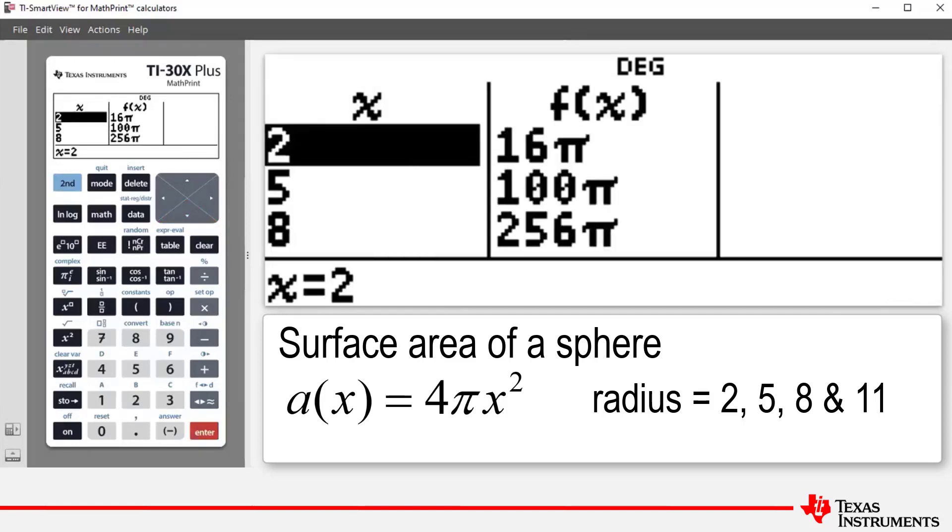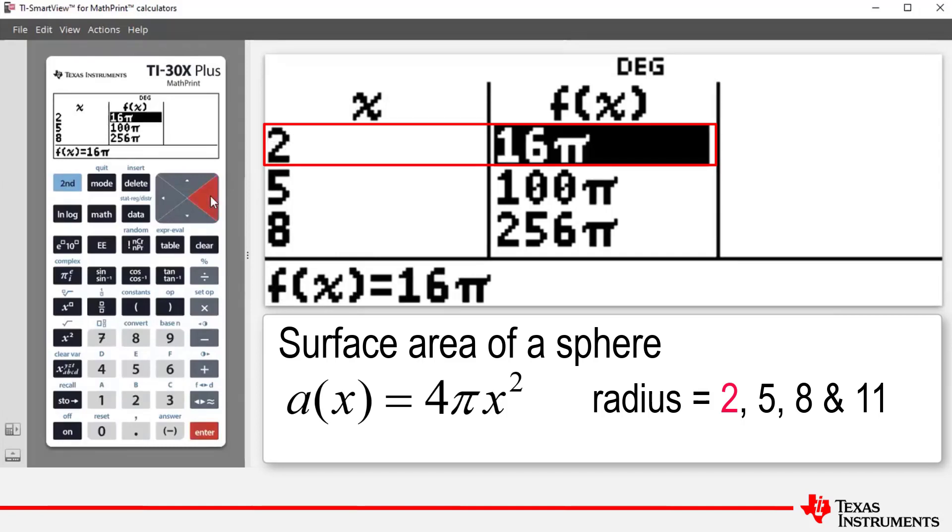Press enter and here we have our table. So for example when the radius is 2, the surface area of the sphere is 16π. Notice that it's an exact answer.